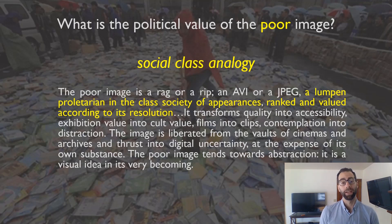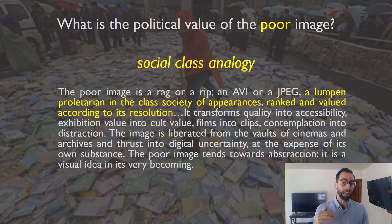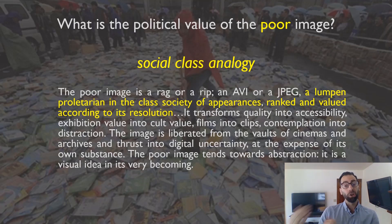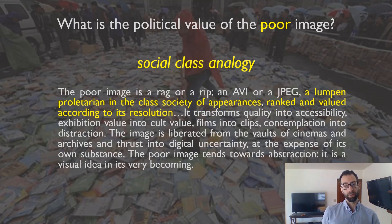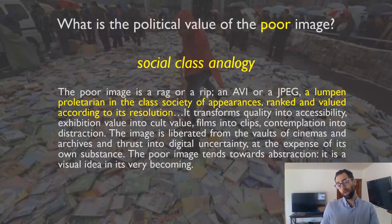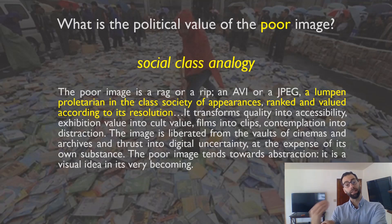We can see this in the second paragraph of the essay. She writes: 'The poor image is a rag or a rip, an AVI or a JPEG, a lumpen proletarian in the class society of appearances ranked and valued according to its resolution.' Immediately we get an analogy between the poorness of poor images and social groups relegated to the bottom of political hierarchies, adopting the language of Marxist theory. There's a double valence to the word 'poor' — poor visual quality and economically poor.